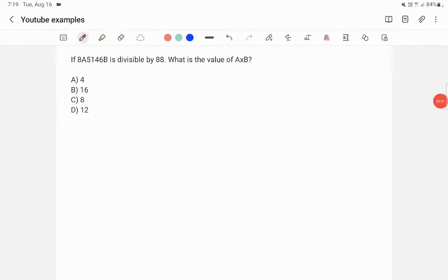This is an example for divisibility rules. If 8a5146b is divisible by 88, what is the value of a×b? The problem here is that you don't know the divisibility rule for 88. In such cases, you need to split 88 into multiples of two values whose divisibility rules you know.